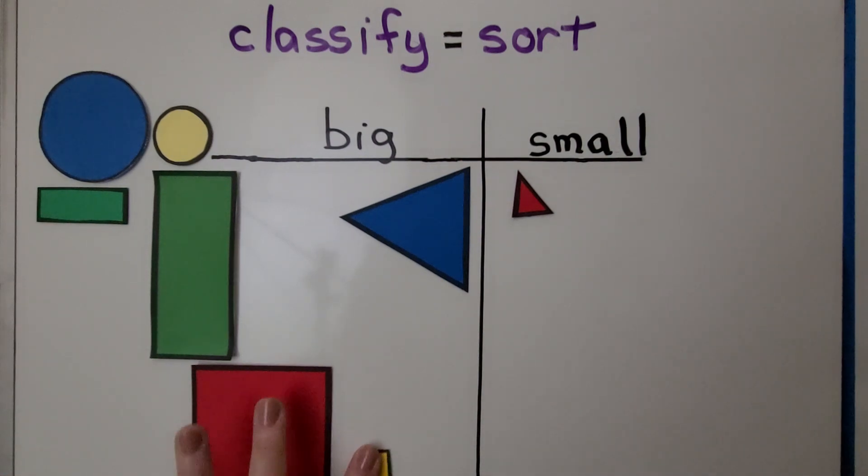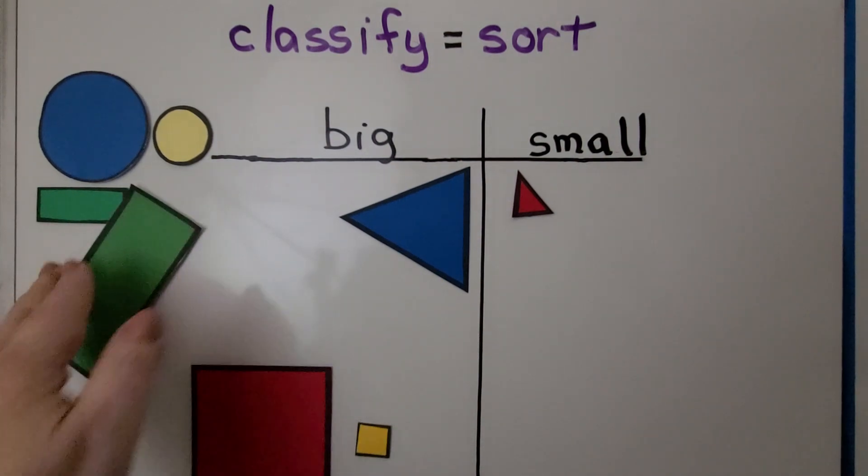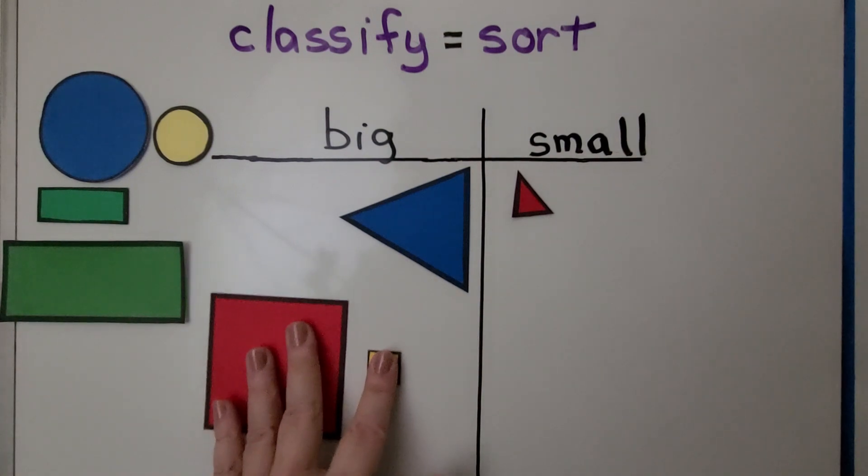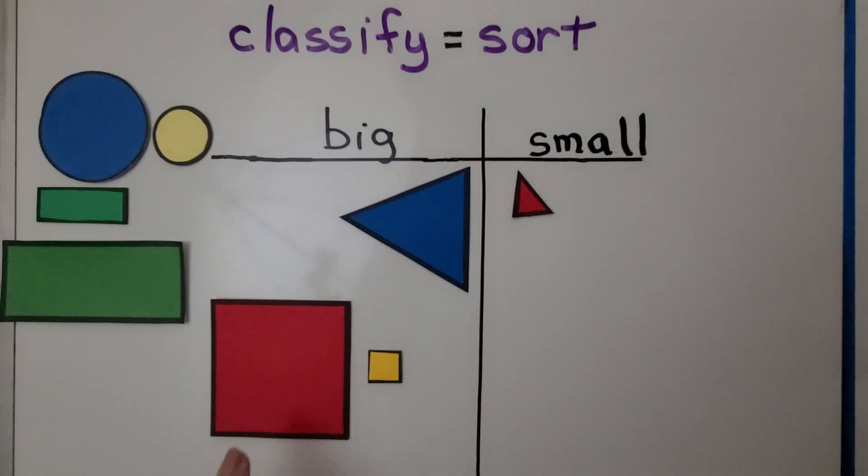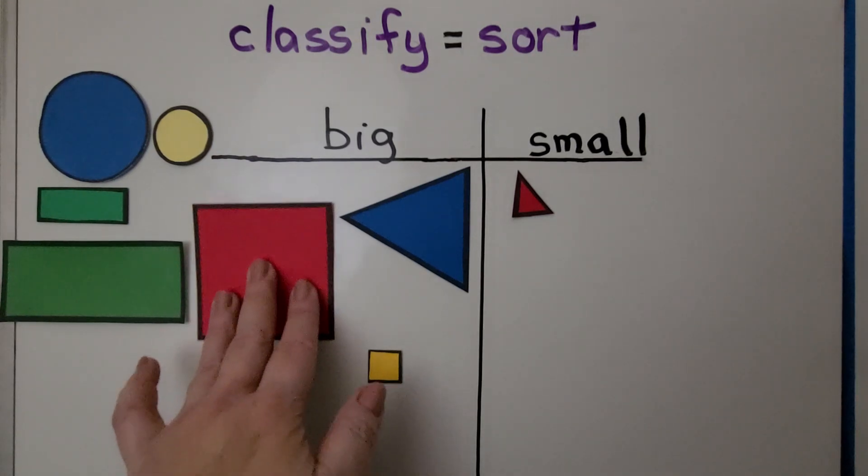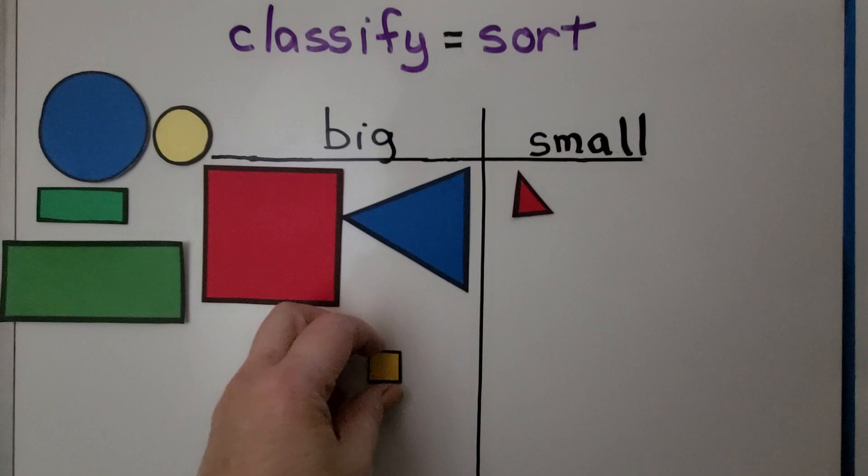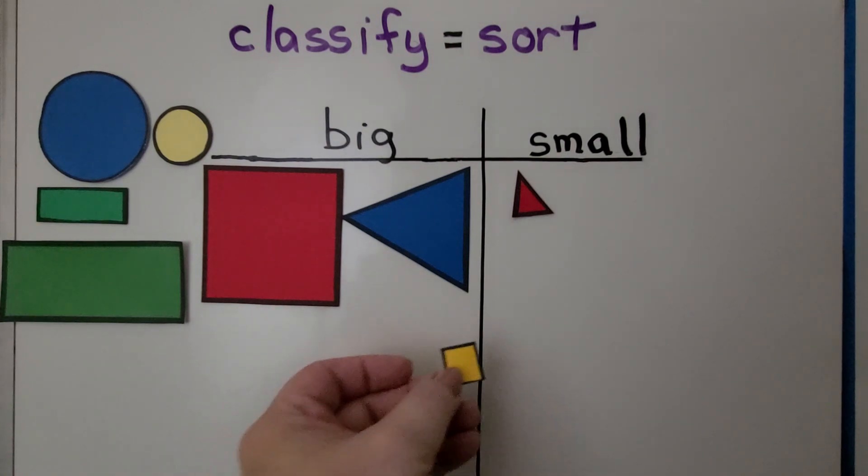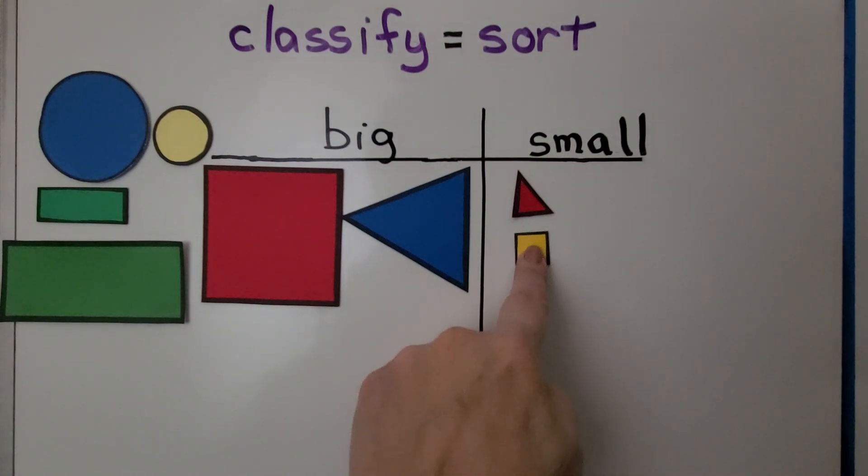Look at these squares. Let's move this so you can see it. Which side should this square go on and which side should this square go on? If you said this is a big square you're right, we can put it on the big side and this is a small square. It's a very small square. We could put it on the small side.